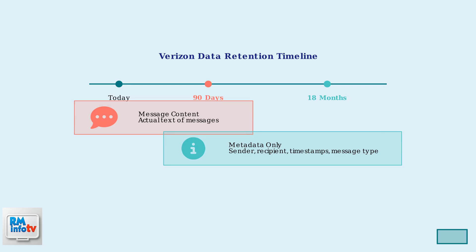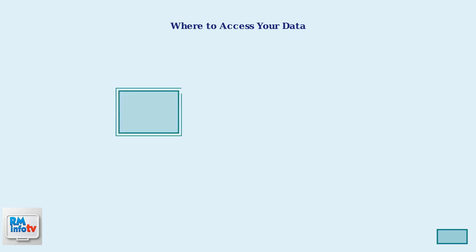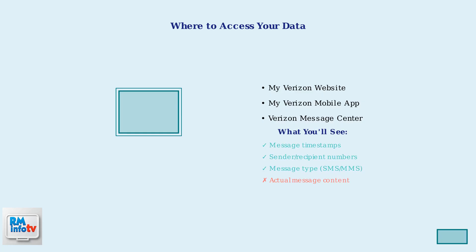The metadata includes information like who sent the message, when it was sent, and what type of message it was — but not the actual words. You can access your text message information through the My Verizon website, mobile app, or the Verizon Message Center. However, what you'll find is primarily metadata rather than the actual message content.